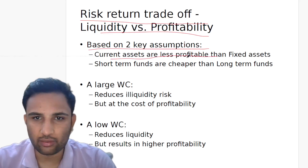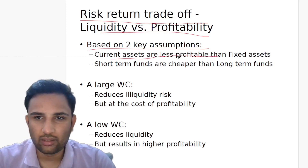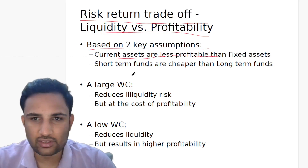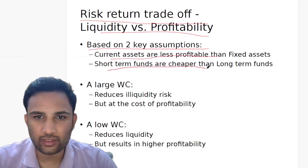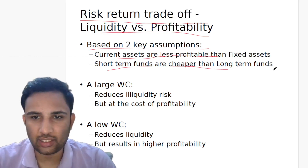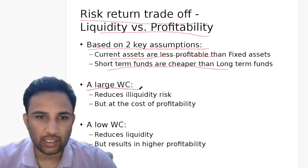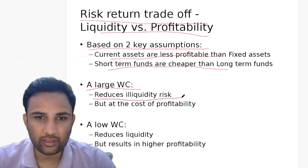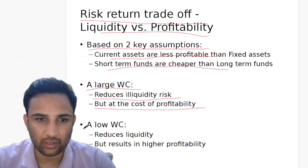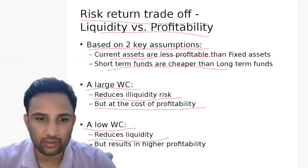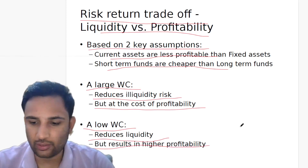Risk-return trade-off — liquidity versus profitability — is based on two key assumptions: current assets are less profitable than fixed assets, and short-term funds are cheaper than long-term funds. A large working capital reduces liquidity risk but at the cost of profitability. A low working capital reduces liquidity but results in higher profitability.